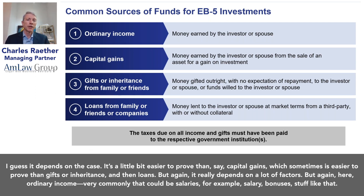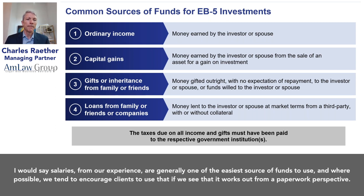Ordinary income could be from self-employment or third-party employment. If it's third-party employment — meaning you don't have any ownership in the company — that's the gold standard, and generally very easy to document. In Russia, for example, that would be the form 2-NDFL most commonly used, along with sample pay stubs, an employment agreement, or other letter confirming the person's employment, position, and tenure.